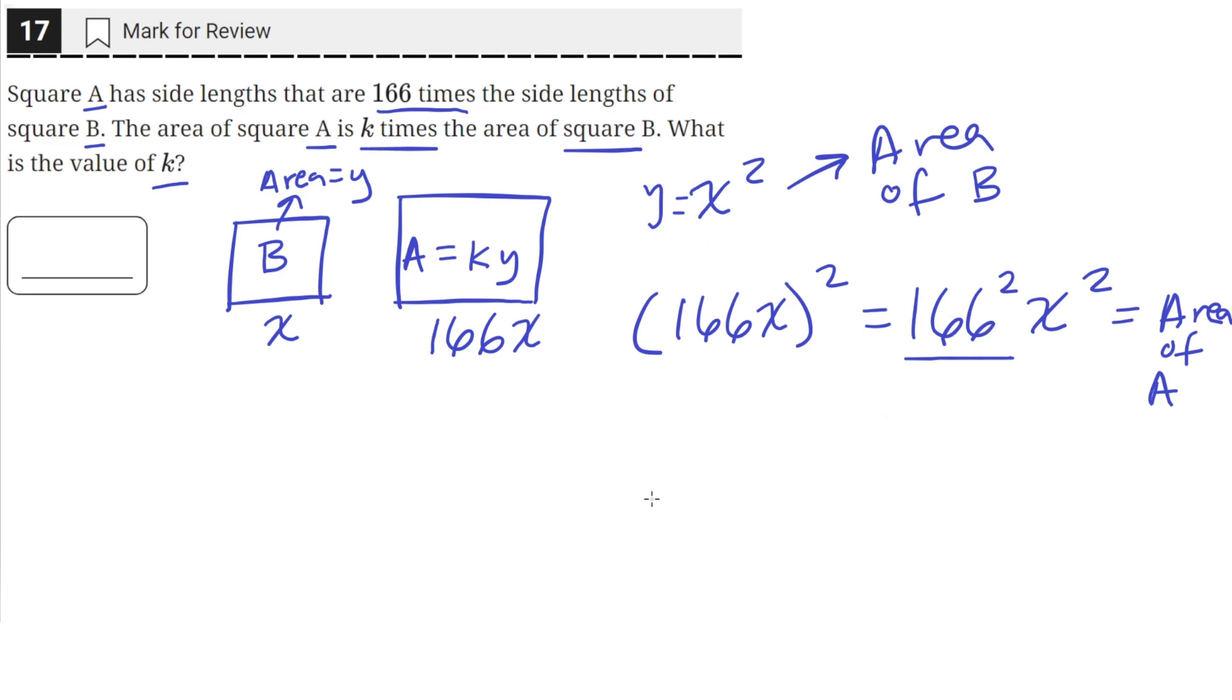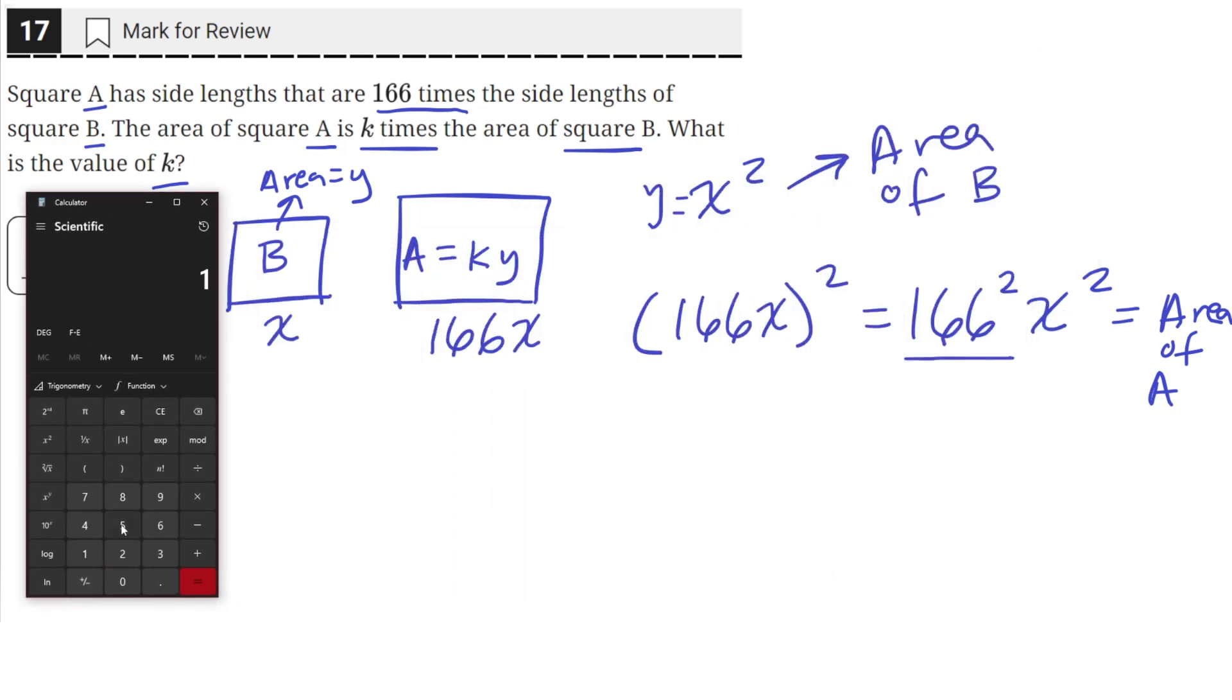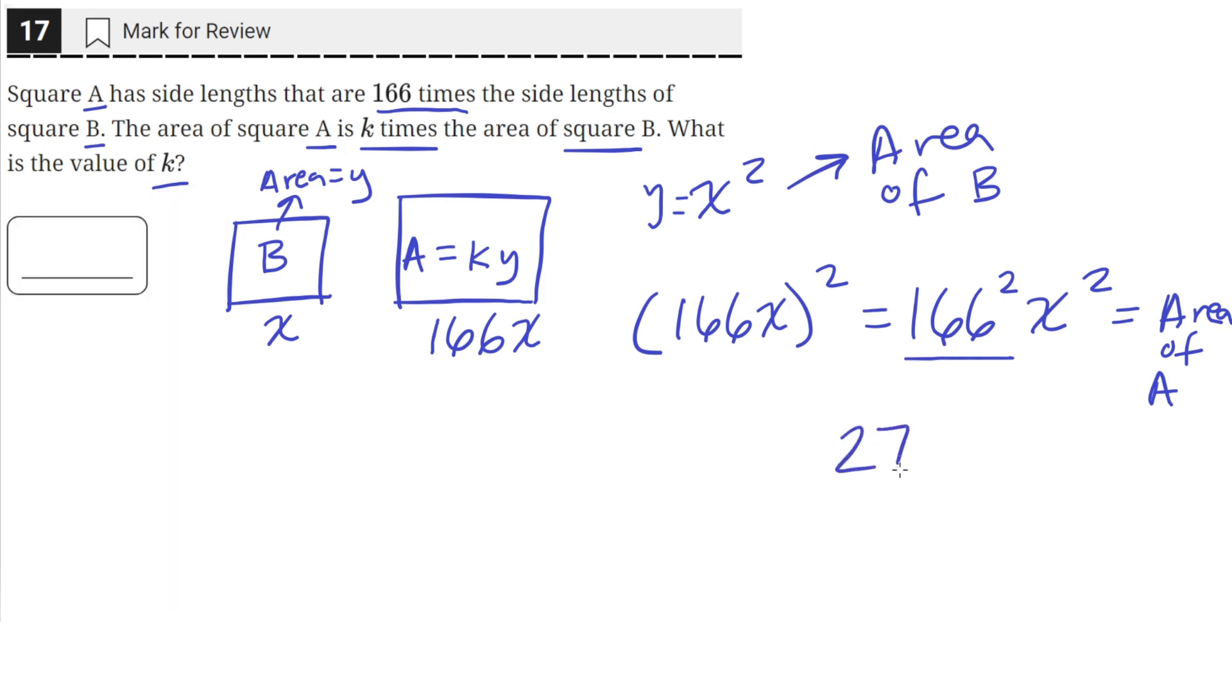So we just need to square 166. We can do that in our calculator. So 166 times 166, which is equal to 27,556.